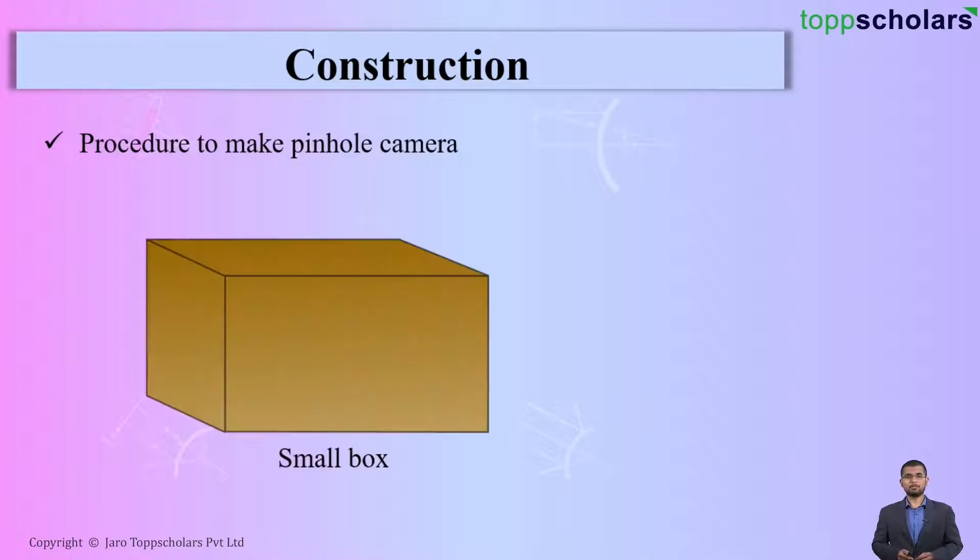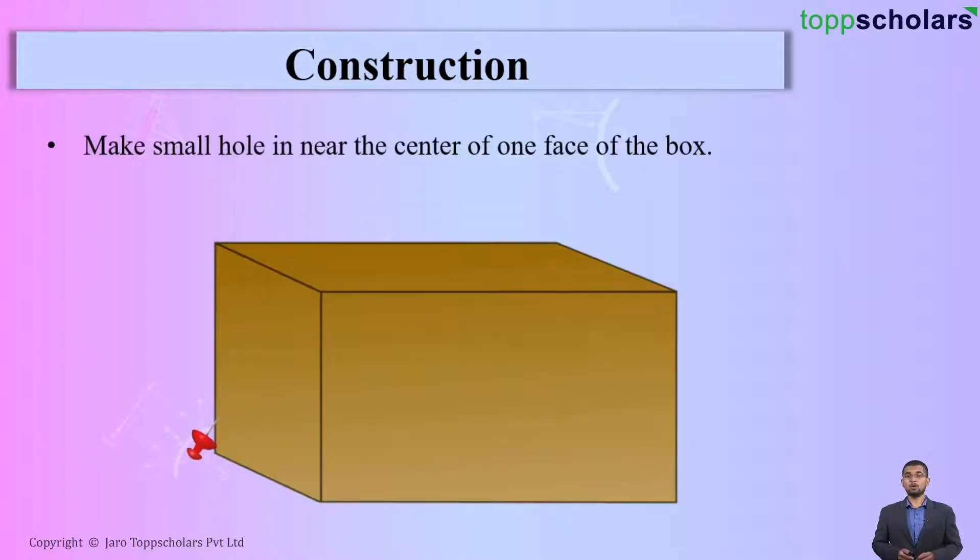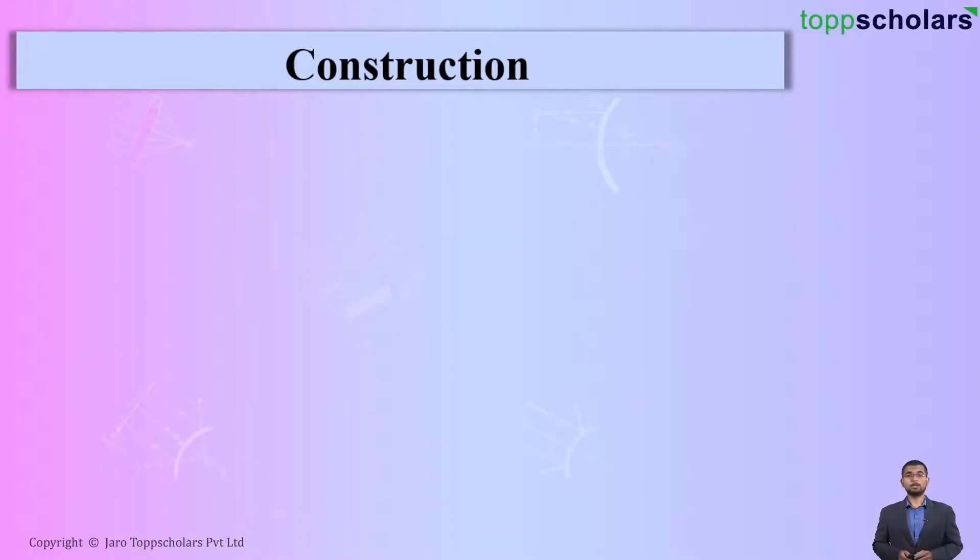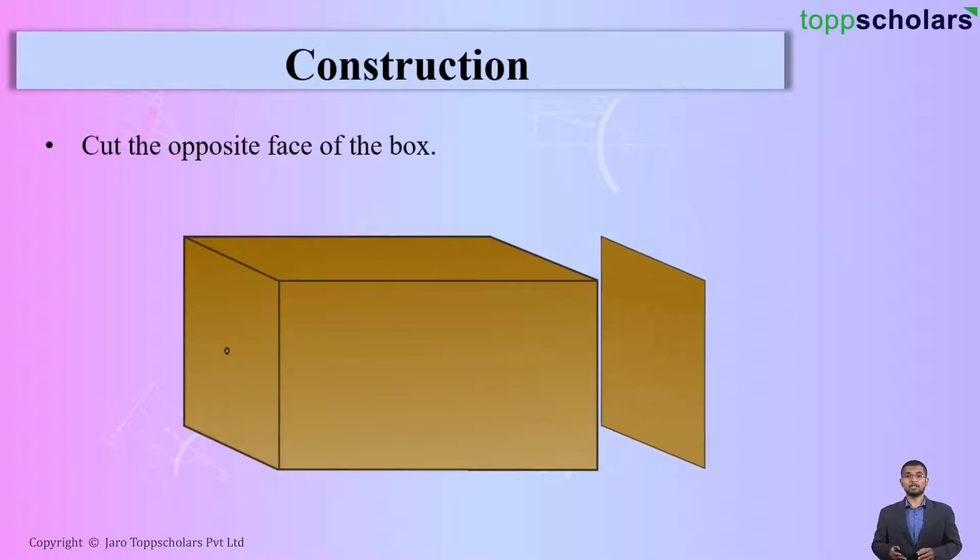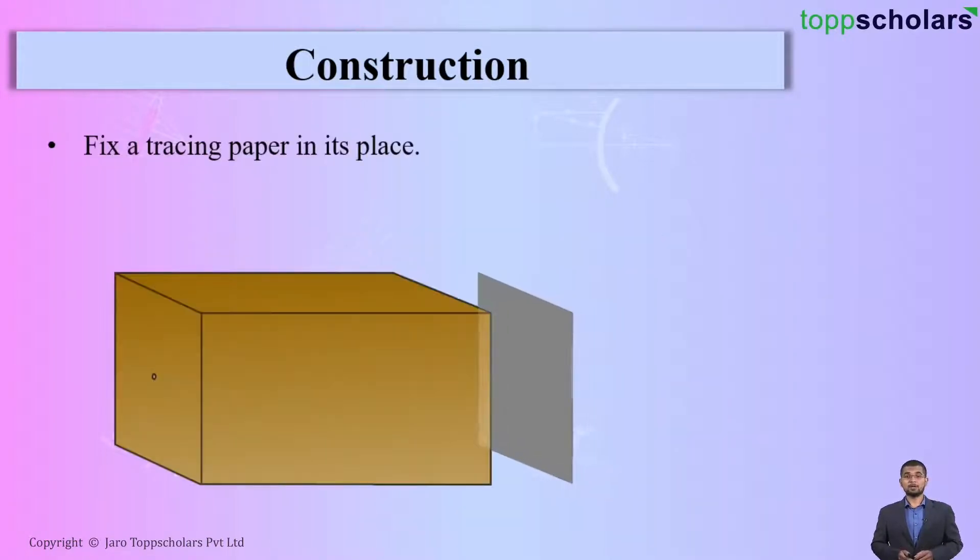First, you have to take a small box and you will make a small hole near the center of the face of the box. After this, you need to cut the opposite side of the box and fix a tracing paper on its place. So, your pinhole camera is ready.